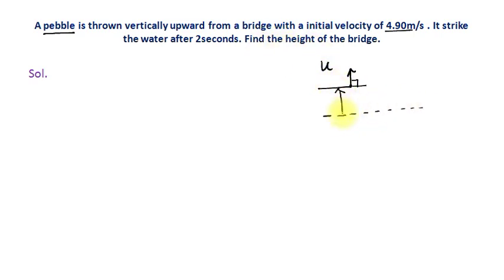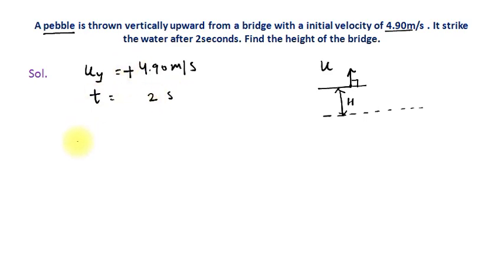We need to find the height of the bridge. The given information: U_y (initial velocity) is 4.9 m/s upward, so we use a plus sign. Time to reach water level is 2 seconds. We will use the equation h = U_y·t + ½·a·t². We use this because acceleration is constant — acceleration due to gravity — and this is minus g.